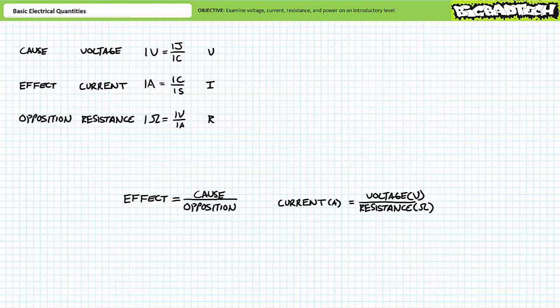This extremely important cause, effect, and opposition relationship is known as Ohm's Law, which will be the most frequently used tool in your toolbox throughout the course of the entire basic, intermediate, advanced, and super advanced electronics series. I'll devote another entire lecture to DC Ohm's Law.